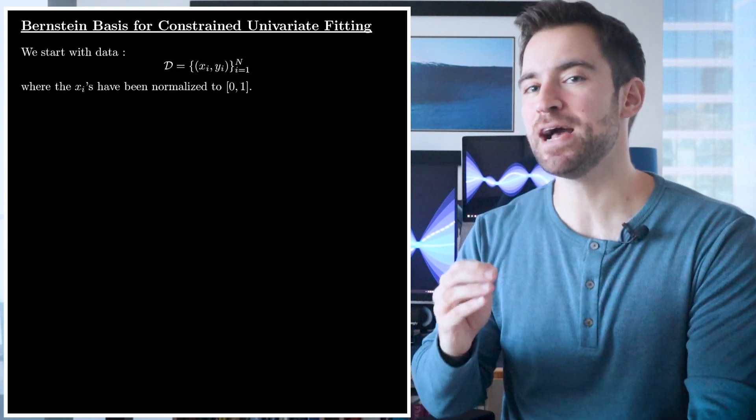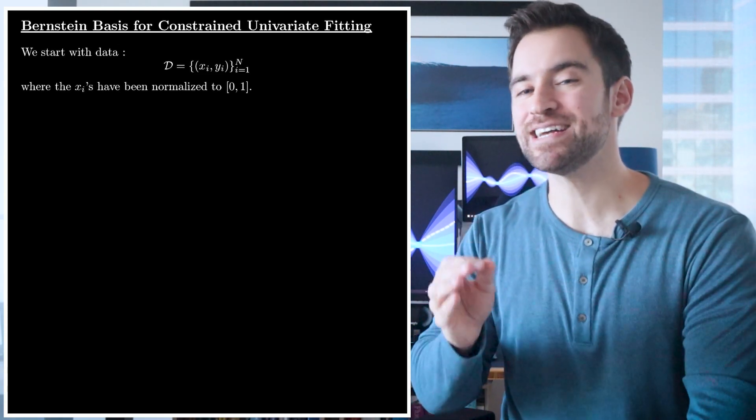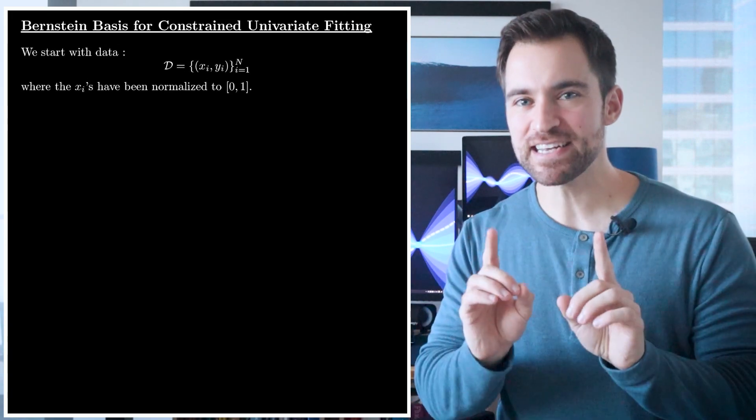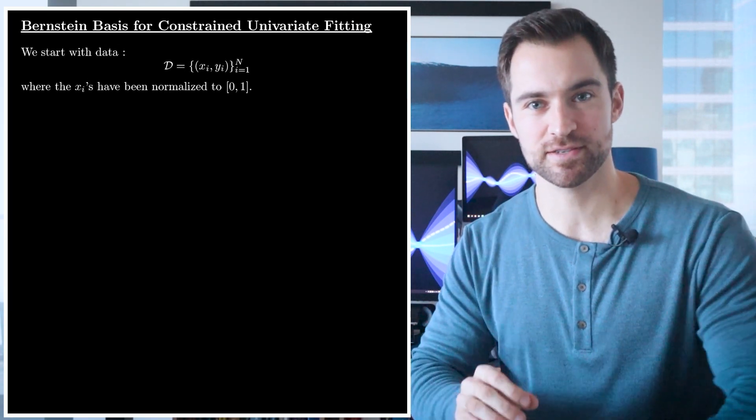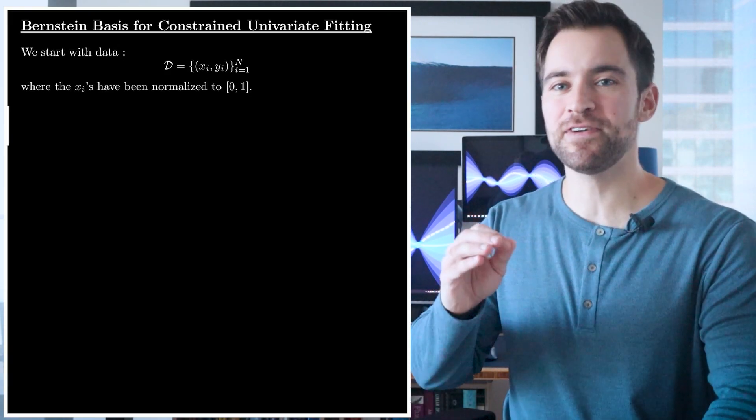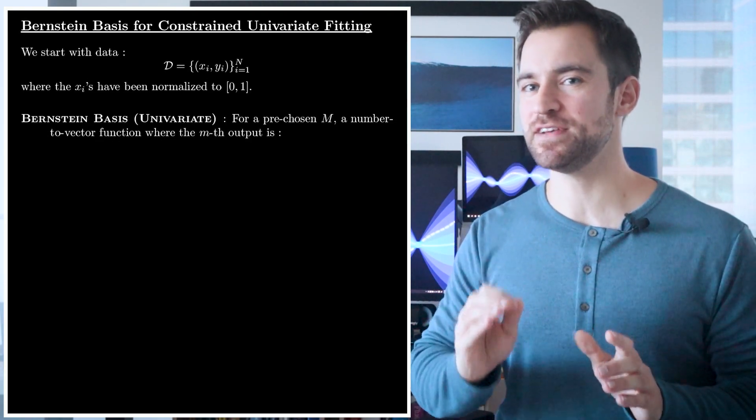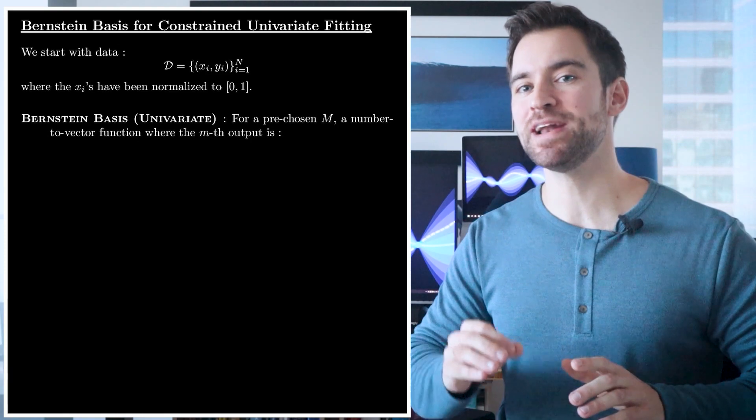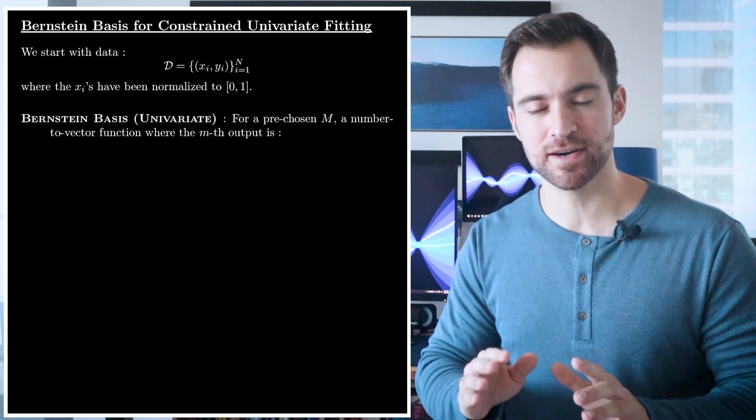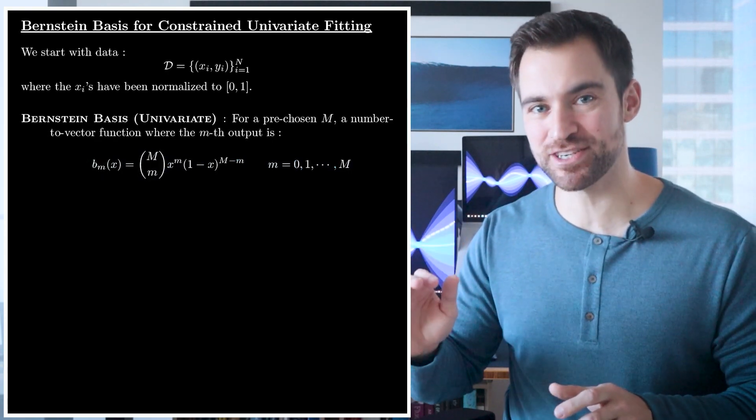the Bernstein basis is a type of basis expansion. That means it's going to map each xi number to a vector. Then we're going to regress the y's on these vectors. If this idea sounds unfamiliar, then check out my video on linear regression and ordinary least squares. But otherwise, let's stay focused. We can define the Bernstein basis as follows. First, you need to pick a positive integer, which we'll represent with a capital M. This number will determine how many elements are in the output vector. With that, the mth output is given with this expression.